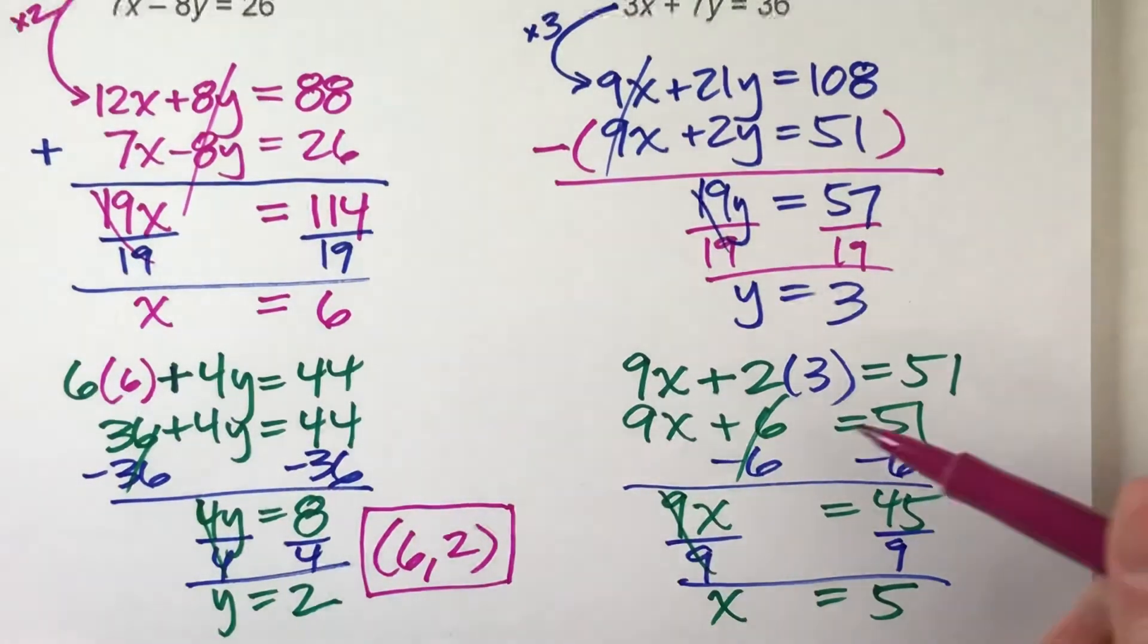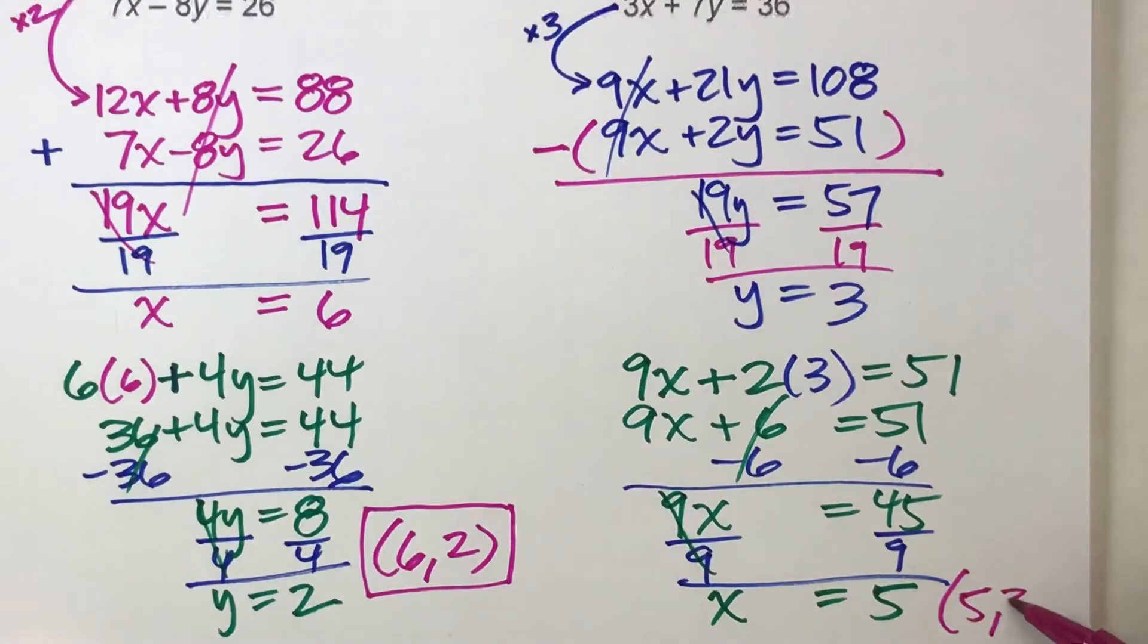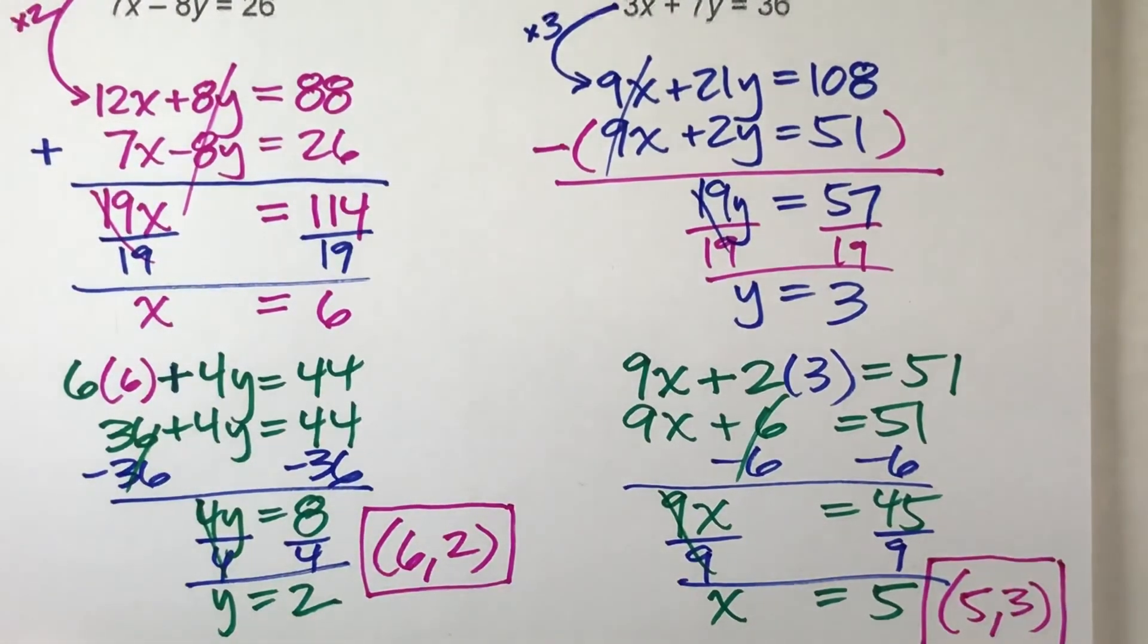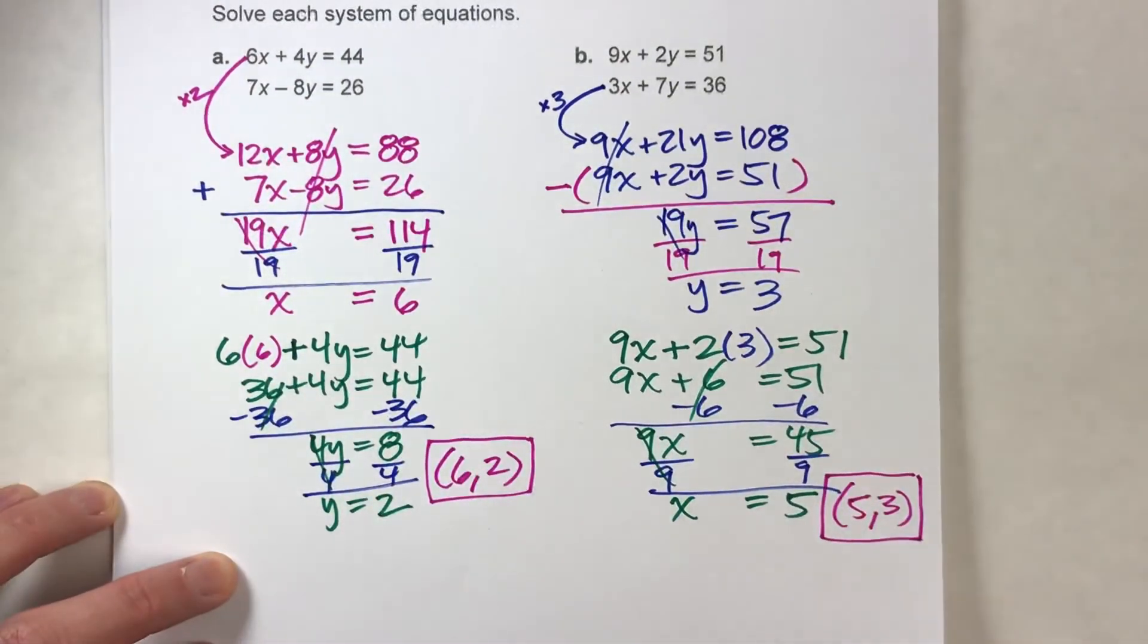So now I've got the solution to my system. X is 5, Y is 3. Let's zoom out a little bit so you guys can see it.